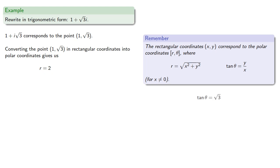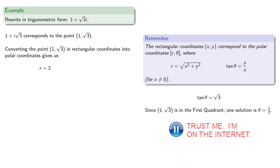And tan theta should be y divided by x, so we have tan theta equals square root 3. And since our point (1, root 3) is in the first quadrant, one solution is going to be pi thirds. And so our point in rectangular coordinates gives us our point in trigonometric coordinates with modulus 2 and argument pi thirds.